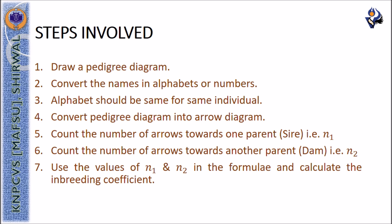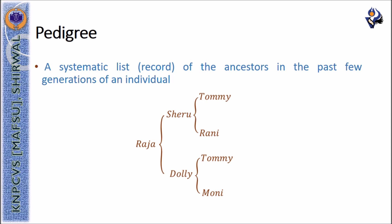The steps involved in calculating inbreeding coefficient are: first, draw the pedigree diagram; then convert the names in the pedigree to alphabets or numbers, using a unique alphabet for each individual; convert the pedigree diagram into an arrow-style pedigree diagram; count the number of arrows towards one parent as n1 and towards the other parent as n2; then use the values of n1 and n2 in the formula to calculate the inbreeding coefficient.